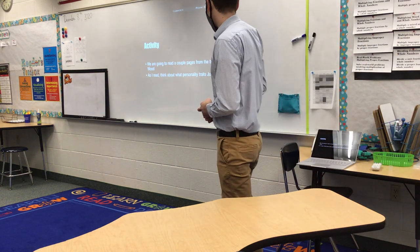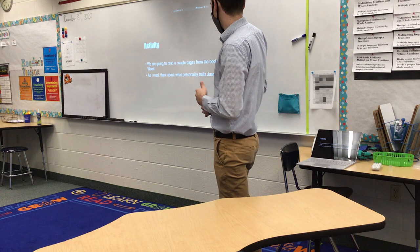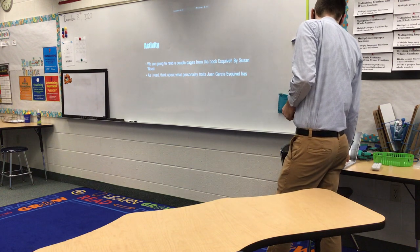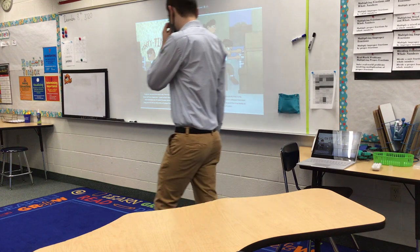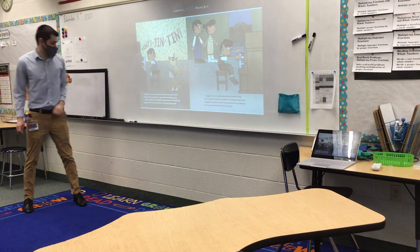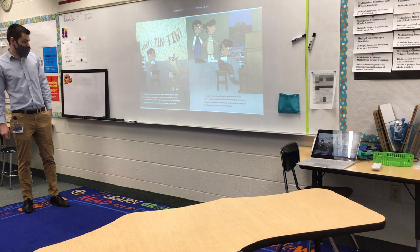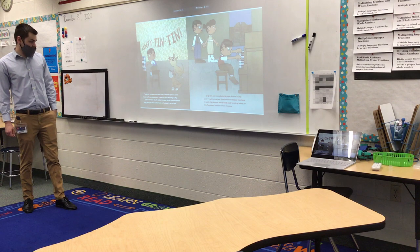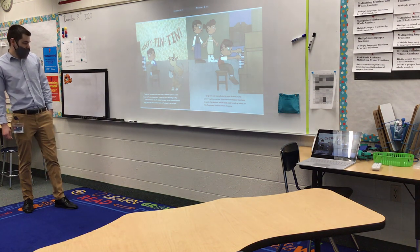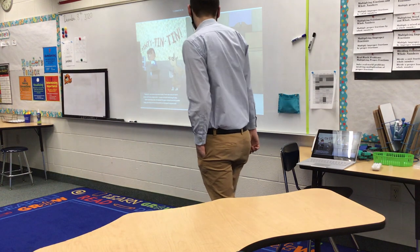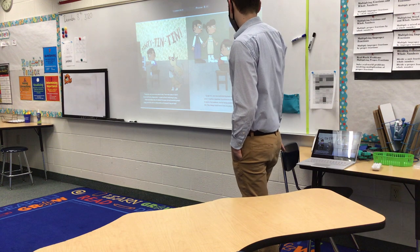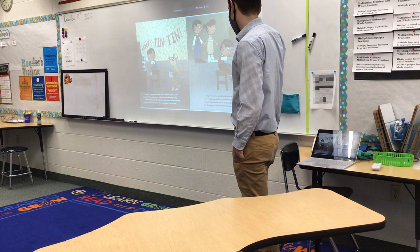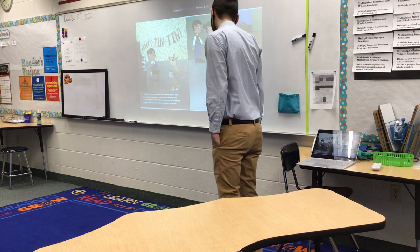So we're going to read a couple pages from the book Esquivel by Susan Wood. And as I read, think about what personality traits Juan Garcia has. So by age six, Juan was curious about music. There was a piano at Juan's house, but it was a player piano — a paper roll told it which keys to play. Clever Juan had an idea. He disabled the paper roll and turned his parents' jangly piano into one he could practice on. He played it day and night. By age ten, Juan was captivated by music. He loved to play piano anytime, anywhere. Sometimes he'd disappear from home in search of an audience, and his family would have to go looking for him. They always found him in front of a piano.